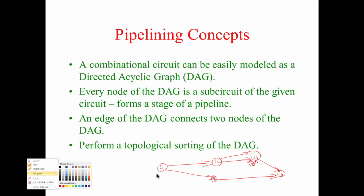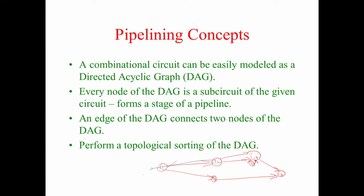In a directed acyclic graph, starting from node i1 I can go to i2 but no way can I come back to i1. I can only go forward to i4, then i6, and finish. There is no way to return to the same node — that is why we call it an acyclic graph. There is no cycle.